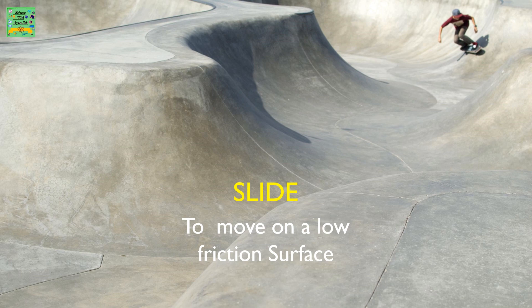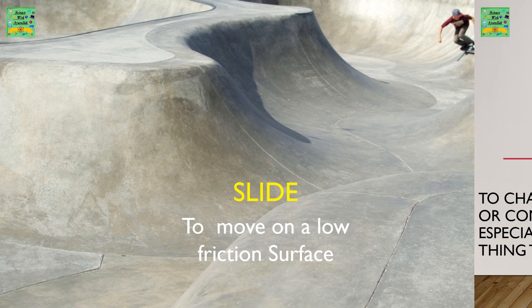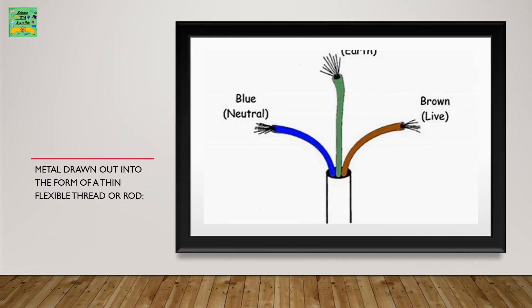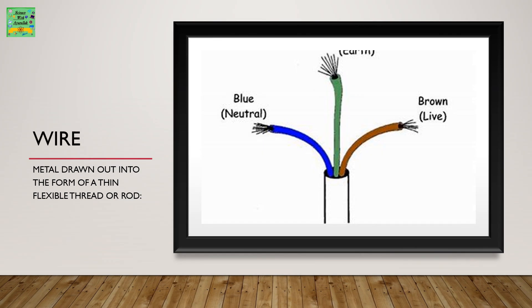Slide: to move on a lower friction surface. Switch: to change suddenly or completely, especially from one thing to another. Wire: metal drawn out into the form of a thin flexible thread or rod. Here is a picture of a wire.